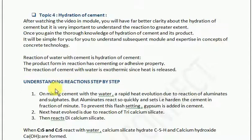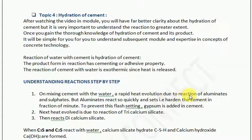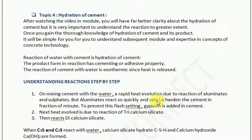Let us break this concept into parts and understand it in depth. The first thing is the addition of water to cement. As soon as water is added, a rapid heat evolution takes place due to the reaction of aluminates and sulphates. When we add water to cement, there is an immediate reaction between the aluminate and sulphate. Aluminate reacts so quickly that it sets and hardens the cement in a fraction of a minute.